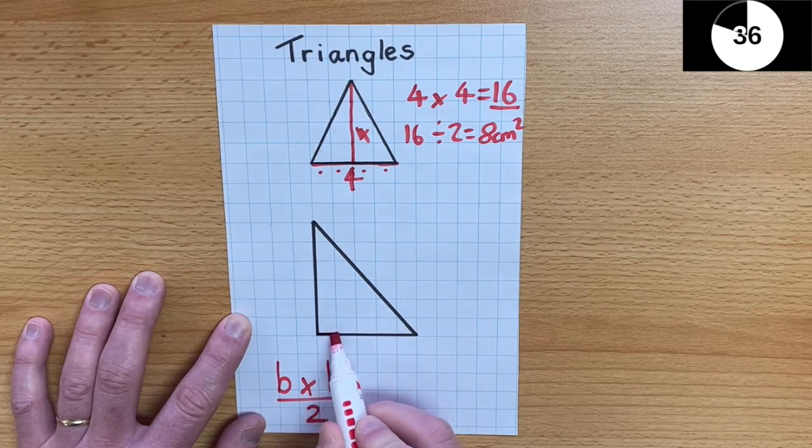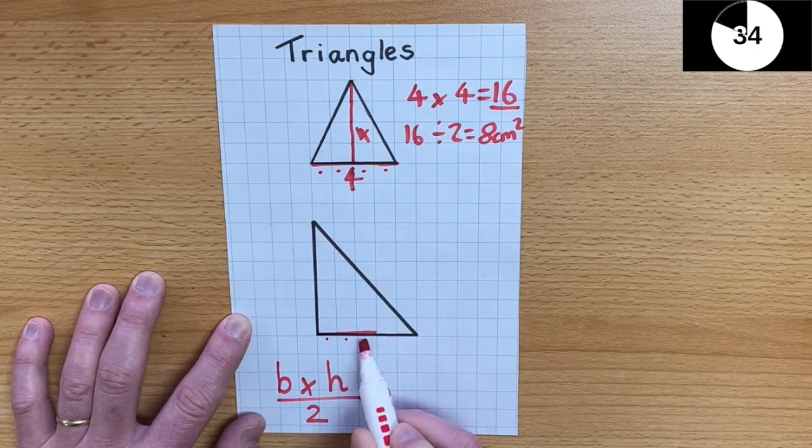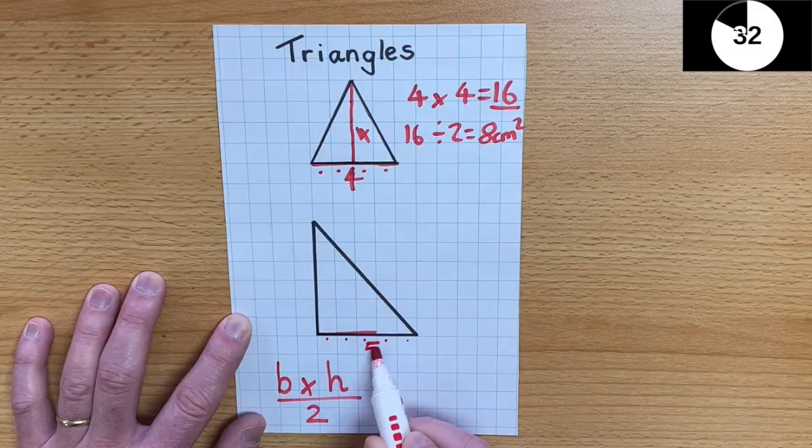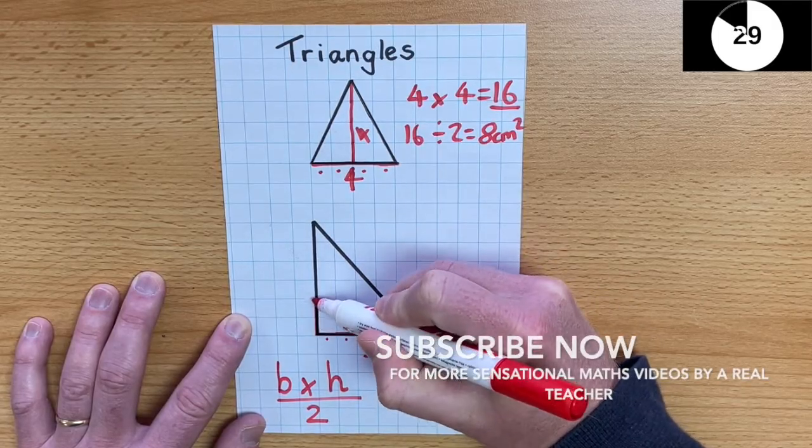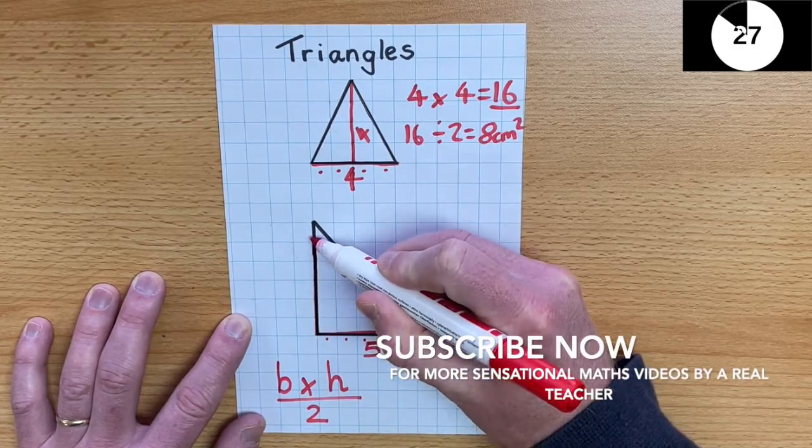This triangle, the base, I can see, is 1, 2, 3, 4, 5. The height is 1, 2, 3, 4, 5, 6.